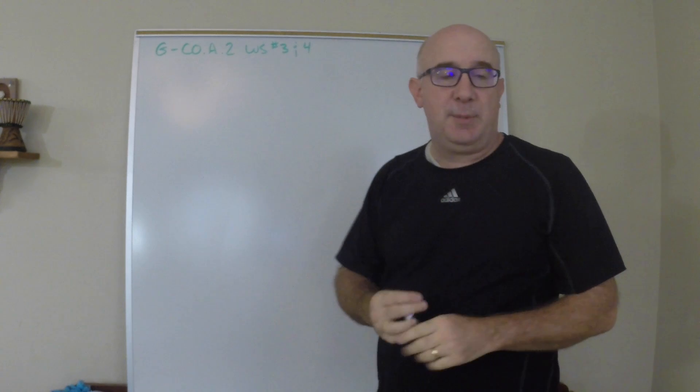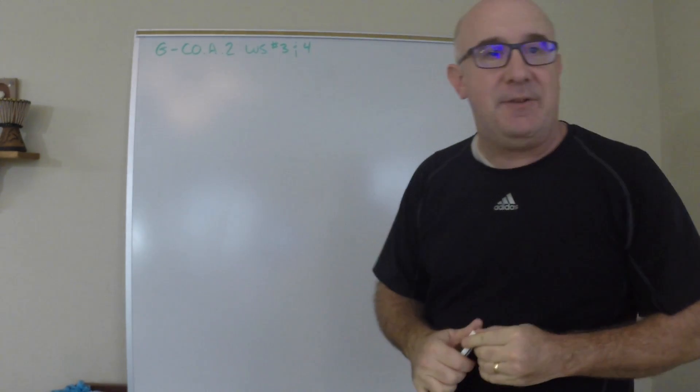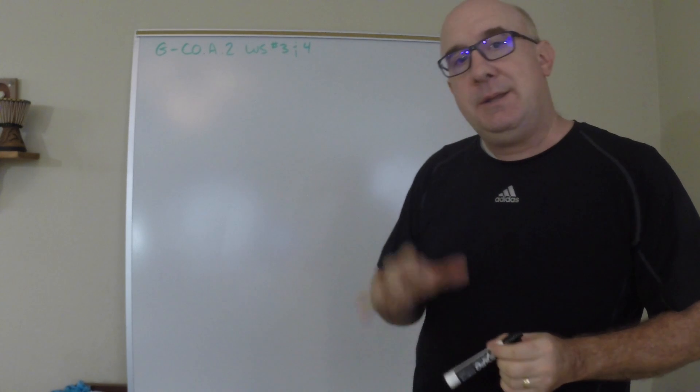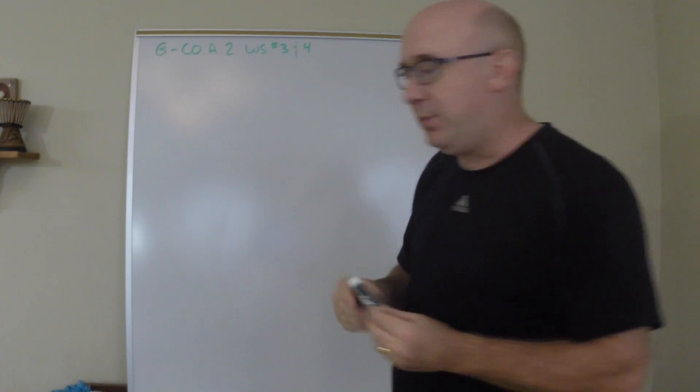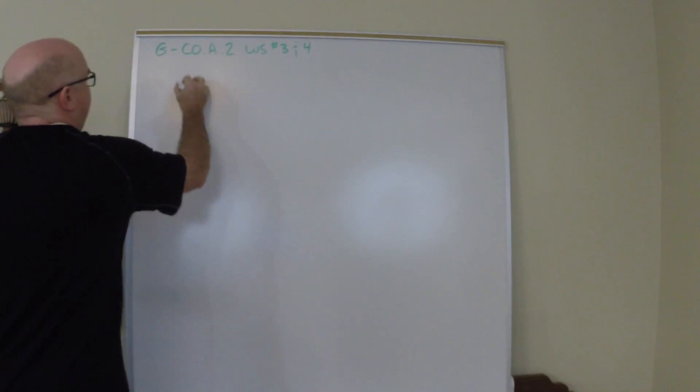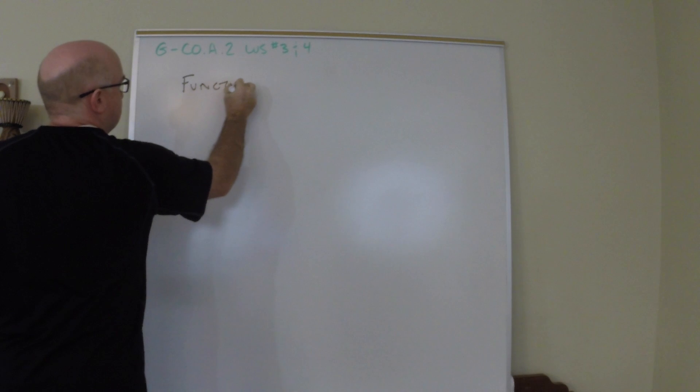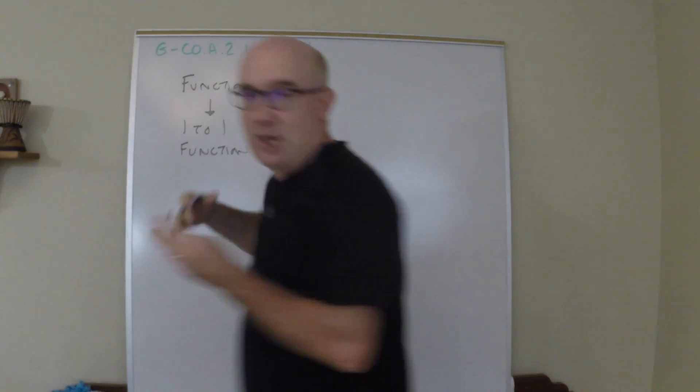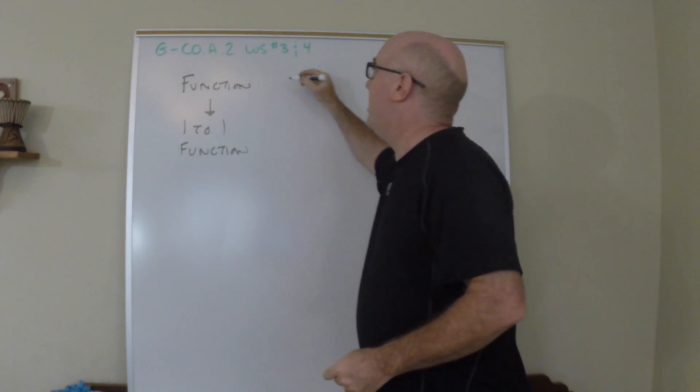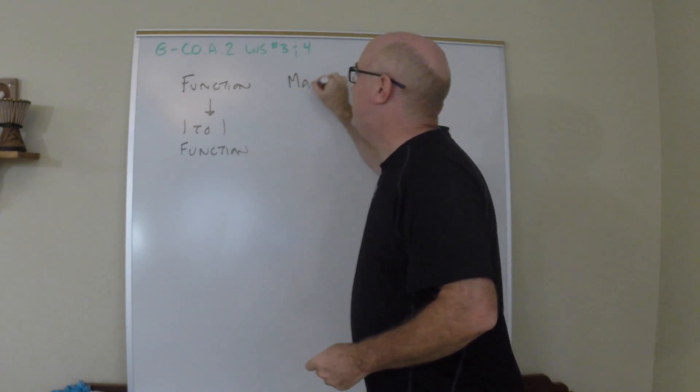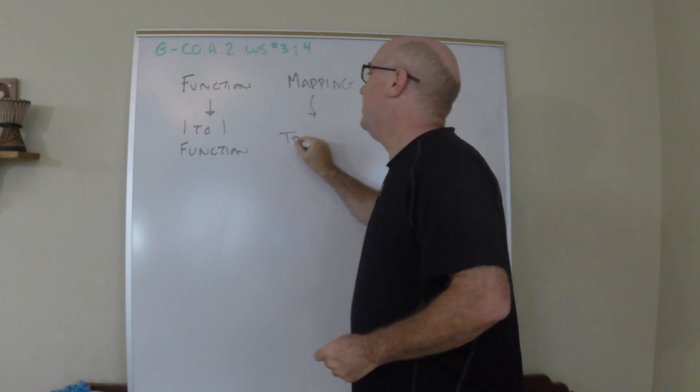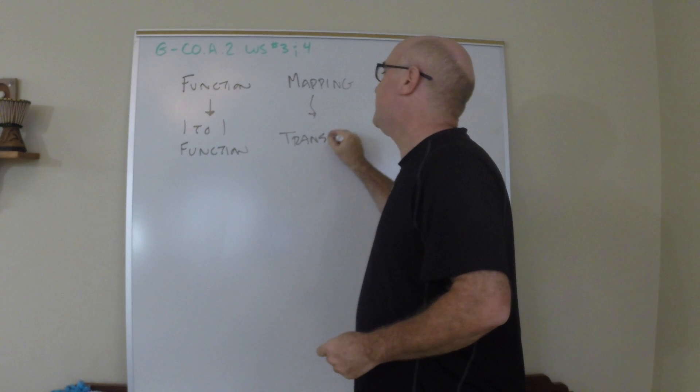All right, let's look at a little bit of help for worksheets three and four. This is GCO A2 still, these last worksheets. We've progressed from function to one-to-one function, that's our old algebra review, which went from what we in geometry are calling a mapping to something we are now going to talk about just about every day for the rest of the year called transformations.